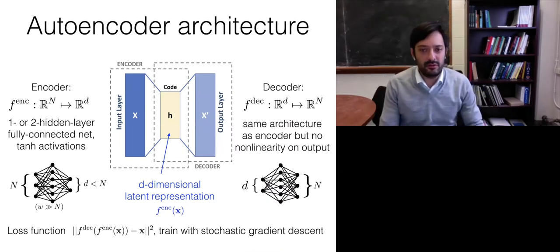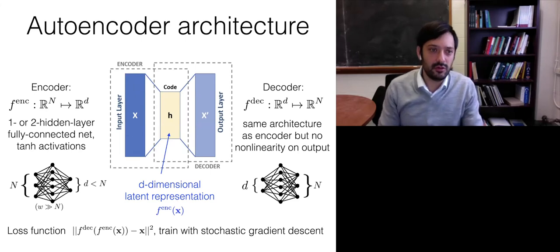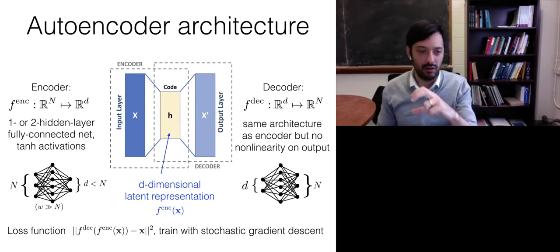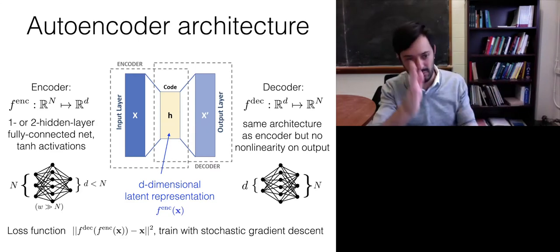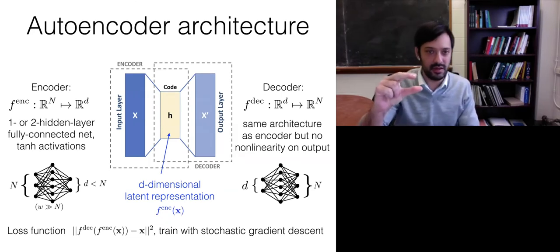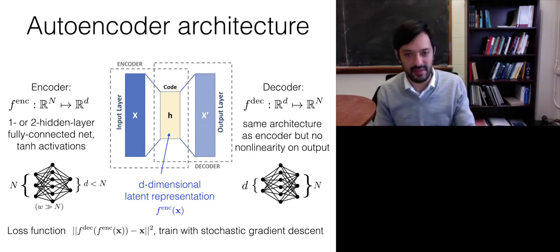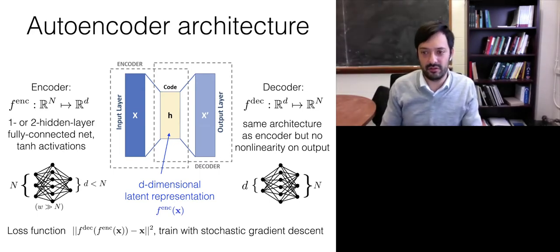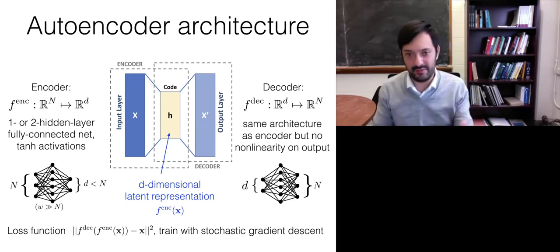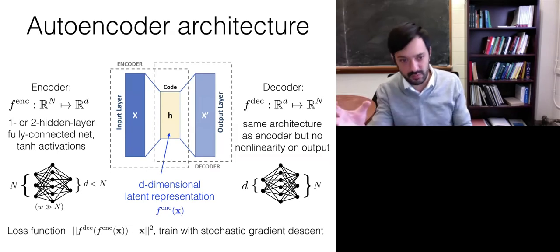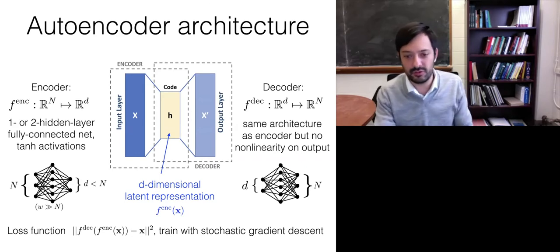Just so we're all on the same page, the architecture for the autoencoders I'll be using is as follows. The encoder will be a one or two layer fully connected feedforward neural network that goes from R^N to a smaller dimension R^D. My input is N neurons, then I go to some wide layer with width W much larger than N — I want to make sure my network has enough capacity — and then I compress to my latent representation of dimension D, which is less than the input dimension. The decoder will again be a fully connected neural network with the same architecture as the encoder, but no non-linearity on the output. My loss function is just the output of the whole network — the composition of encoder and decoder — minus the data itself, squared. I train this network with stochastic gradient descent.